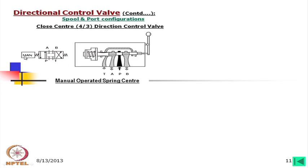The spring is not shown on the other side in this figure, but as it is spring-return, one spring is arranged such that whenever the lever is released, it will return to neutral position. Now we will look at the spool configuration in a bit more detail. Another valve shown is solenoid-operated and spring-centered, meaning there are solenoids on both sides.